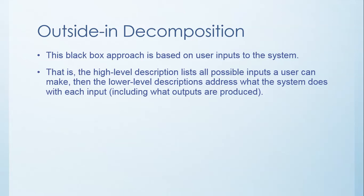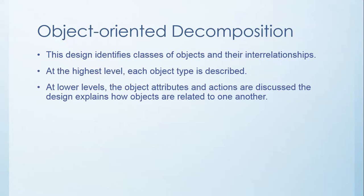So the high-level description lists all those possible inputs, and then the low-level description will then address what the system does with each input, including every single output that would be produced. And that's outside-in decomposition.